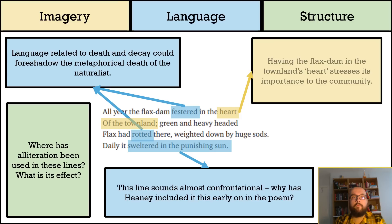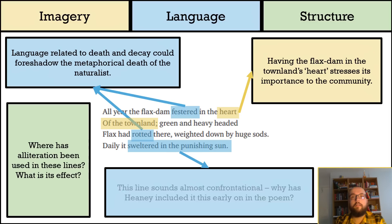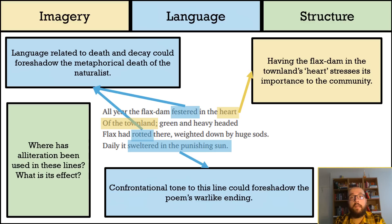I'm arguing that 'heart' has been used to personify the townland. The flax dam — which is just a pool of water where flax, a plant, is placed to soften up — is at the townland's heart, which stresses that it is very important to the community and the persona. Nature and man seem to live in symbiosis. Although it is suggested that man and nature live symbiotically, it also seems that nature is at times in war with itself, as the sun is punishing the flax. This confrontational tone could be used to foreshadow the poem's warlike ending. Although the poem seems very positive about nature, its potential threat is recognised in the early stages.